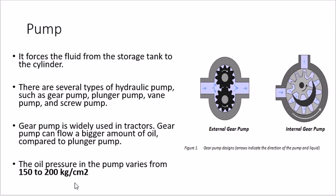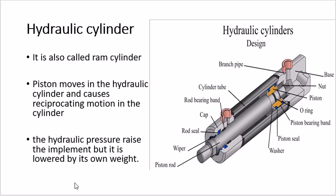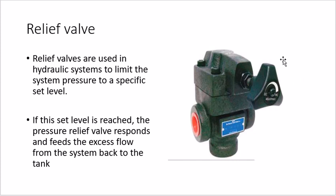The hydraulic cylinder is an important component, specifically used to increase the pressure for a particular application. It is also called a ram cylinder. Looking at the image, the inner part is the ram. There are inlet and outlet valves. When the ram moves outward, oil enters; when the ram moves inward, the oil gets pressurized and exits from the valve. So the cylinder raises and increases the pressure of the oil.